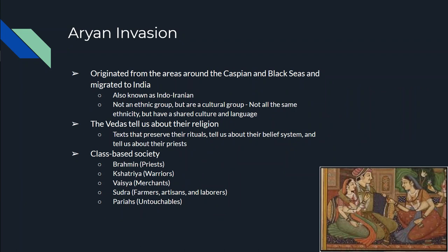At almost that same time, there's another group who come into the area — these groups are called the Aryans. Now just as a side note, you may have heard the word Aryan before, especially when discussing World War II, Adolf Hitler, Nazism, etc. I always try to tell people that they're not related — Aryanism in Nazi Germany was completely made up. These people, the Aryans from ancient India, were a group of people who moved from the Caspian and Black Sea area down south into modern-day India.